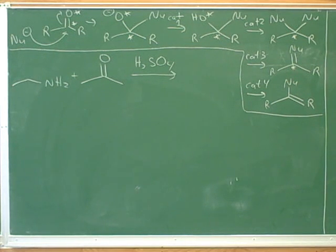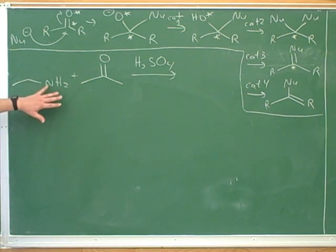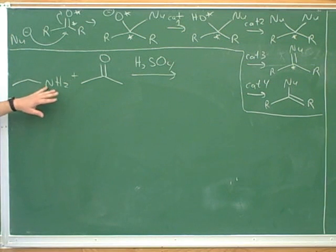There is a way to understand that a little bit, but it'll be easier after we go through the mechanism — remind me to come back to that. A good question is: why do alcohols go through category 2, but this amine goes through category 3? We'll be able to answer that more after we go through the mechanism.